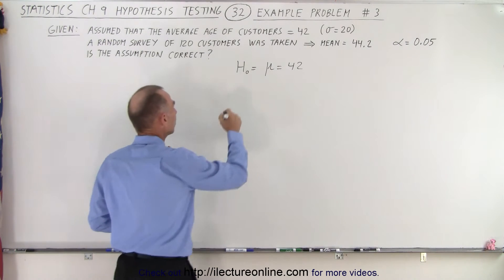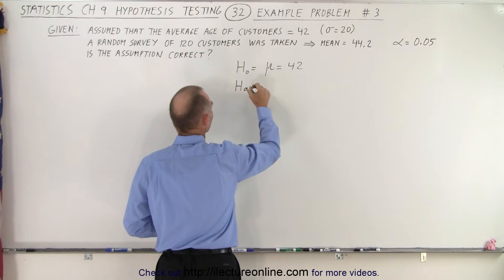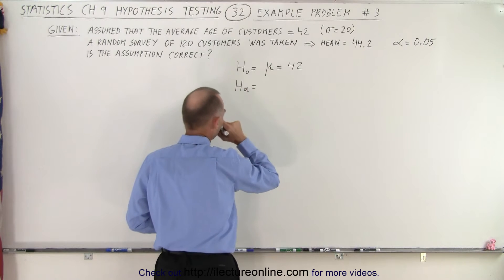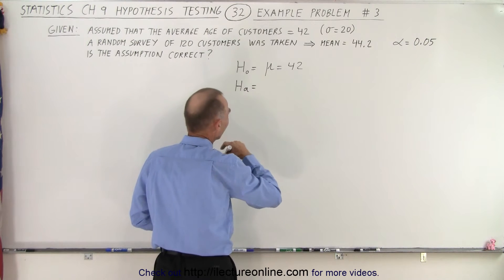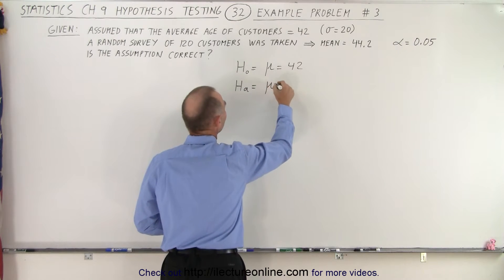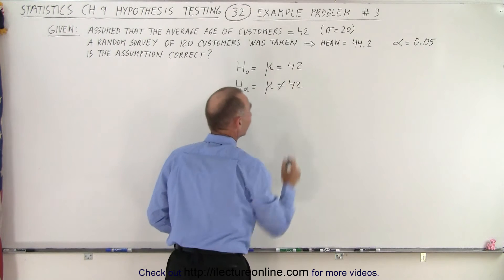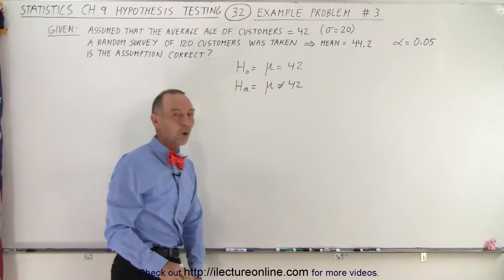Now the alternate hypothesis is that the mean is not equal to 42 — that the assumption was wrong.